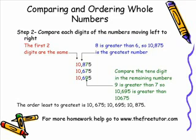Now we continue to move to the right. Comparing the tens digits of the remaining numbers, we can see that nine is greater than seven. So we can conclude that 10,695 is greater than 10,675. By implementing this method we have solved our math problem. Moving in order from least to greatest, the numbers are 10,675, 10,695, and 10,875.